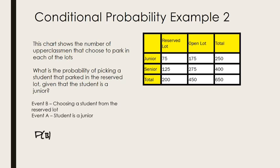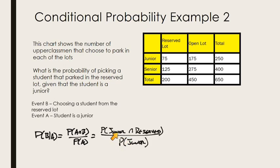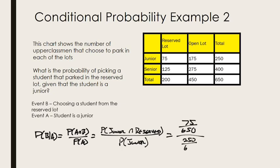Event B is now choosing a student from the reserved lot, and event A is that the student is a junior. The formula stays the same: P(A and B) over P(A). Filling in the wording: the probability that the student is a junior and in the reserved lot over the probability that they're a junior. Our numerator is the same as last problem — 75 out of 650 — but we have a different denominator: the probability that the student is a junior, which is 250 out of 650.